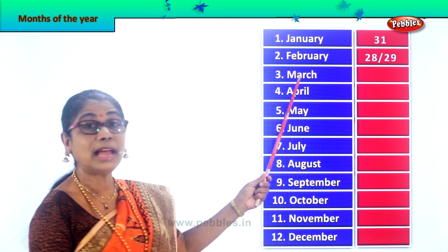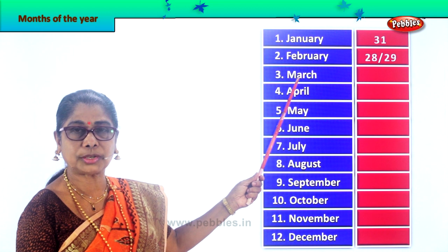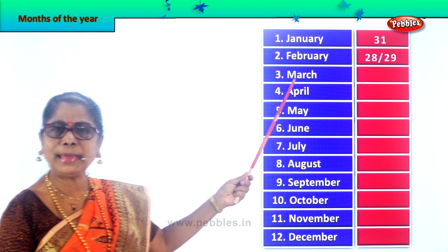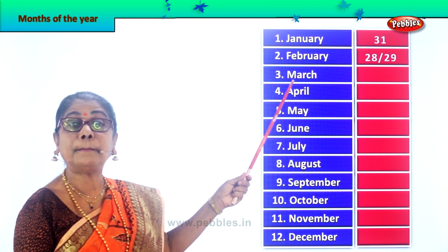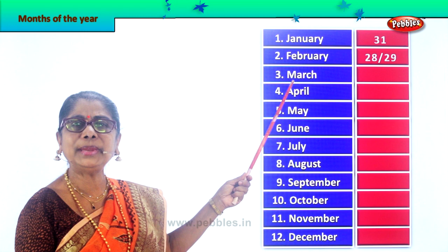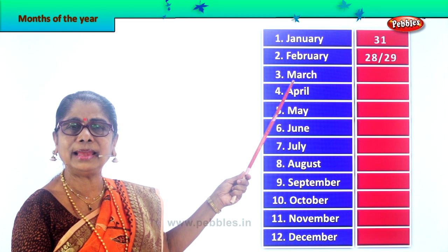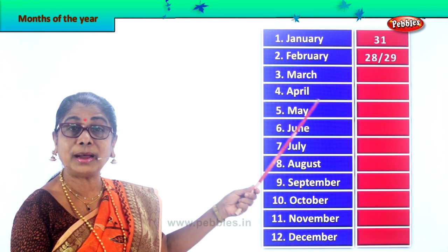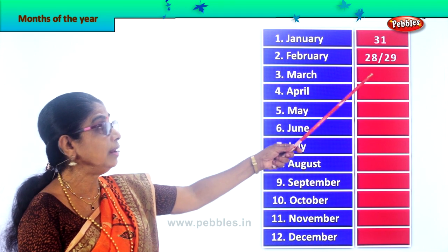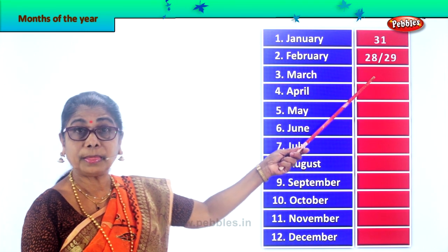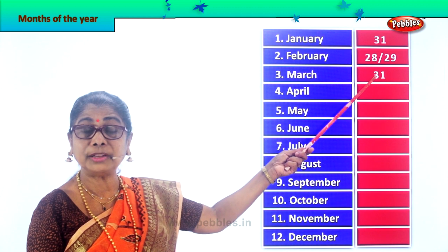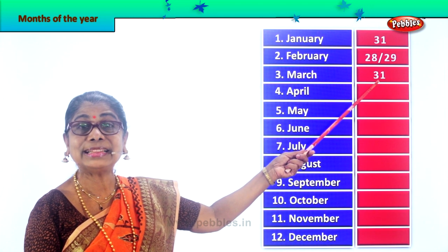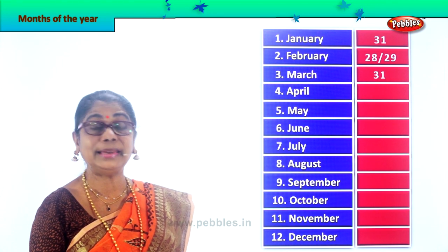The next month is March. Spell March — M-A-R-C-H, March. How many days are there in the month of March? The month of March has 31 days.